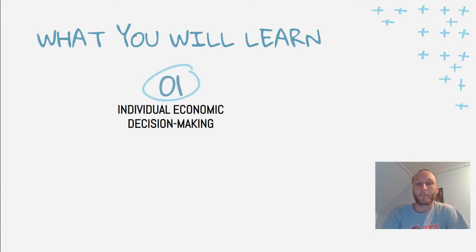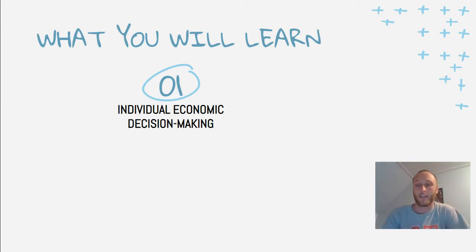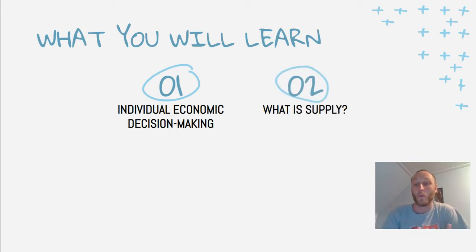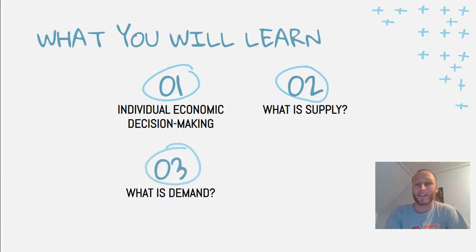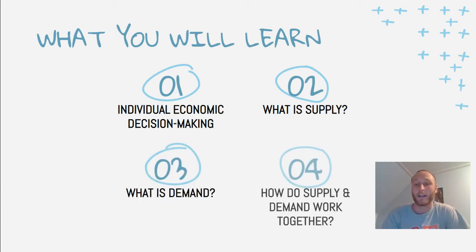So what you're going to learn today: number one, individual economic decision making — when you are making purchases in life, things that you need to consider and think about. Two, what is supply? Number three, what is demand? And finally, how do supply and demand work together?